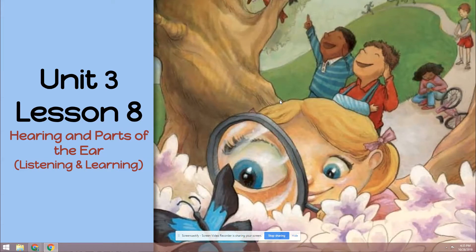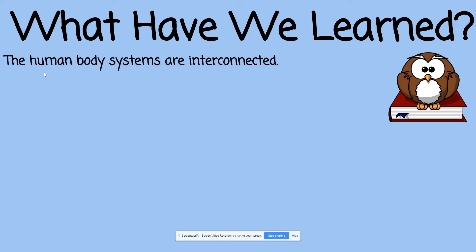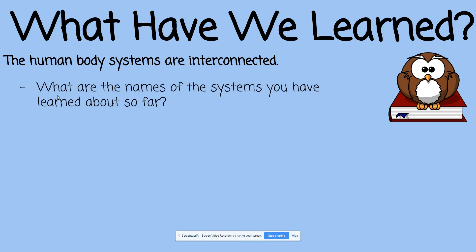Today we are doing Lesson 8, Hearing and Parts of the Ear. This is what we have already learned. The human body systems are all interconnected. We've talked about several systems already. We've talked about the skeletal system, having both the axial bones to the center part of the skeleton and the appendicular skeleton, like your arms and your legs and the appendages that hang.